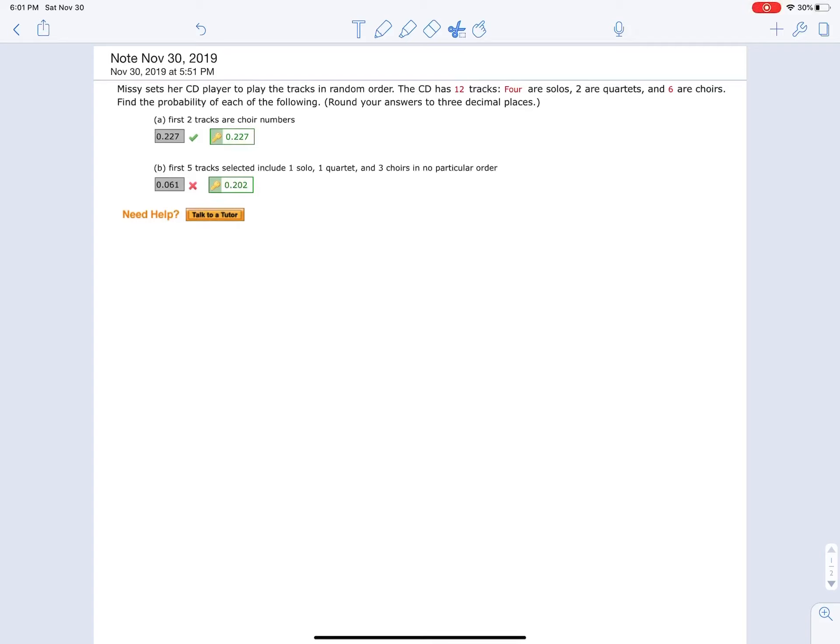All right, so this is a probability question. How do we know it's probability? Find the probability of each of the following. Missy sets her CD player to play the tracks in random order. The CD has 12 tracks: four solos, two quartets, and six choirs.